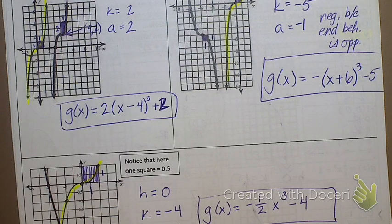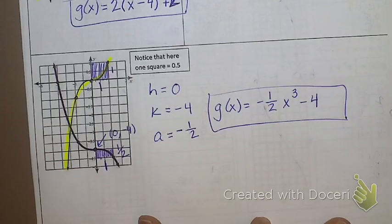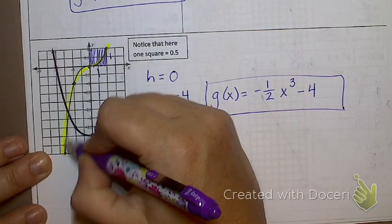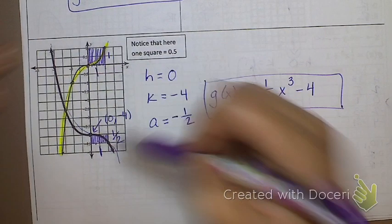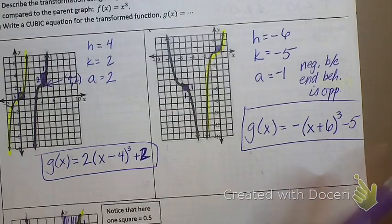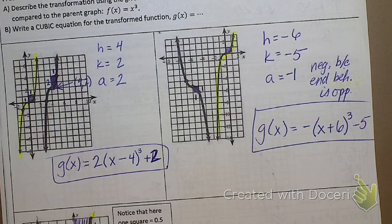Student question: why is A negative? If you're walking from left to right on the parent function, you go uphill. On this graph, walking left to right you go downhill, which means there is a vertical reflection — so A is negative because the end behavior is opposite the parent function. Homework is worksheet 5.3. Happy studying.